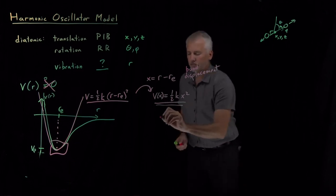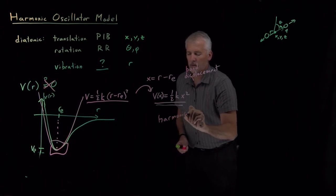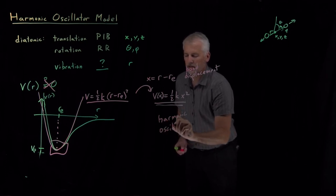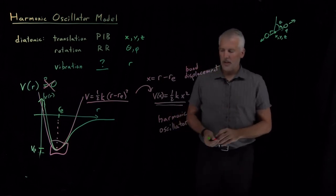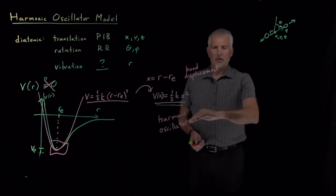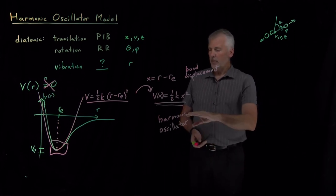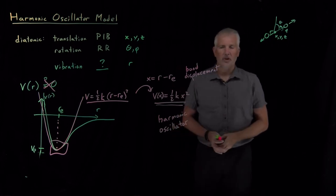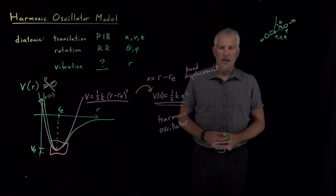That model is called the harmonic oscillator model. And that name may sound a little bit cryptic. It's not obvious necessarily what's harmonic or what's oscillating in this particular model. You might think we would call it the vibrational model or something like that. So the next step will be to explain a little more about this model and why it is called the harmonic oscillator model.